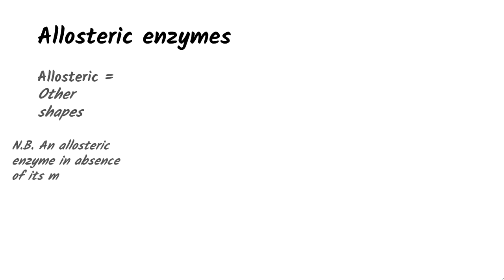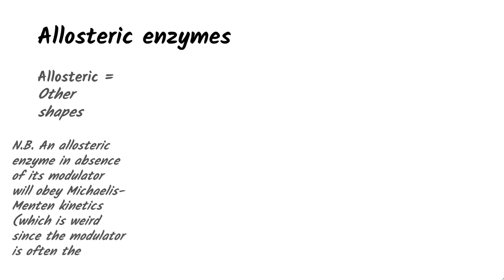Allosteric means other shapes. They are enzymes that function through reversible, non-covalent binding of regulatory compounds called allosteric modulators, or allosteric effectors, which affect their structure in ways that alter their catalytic process. Often, this modulator is the product of the reaction itself, thus called homotropic regulation, otherwise it receives the name heterotropic.